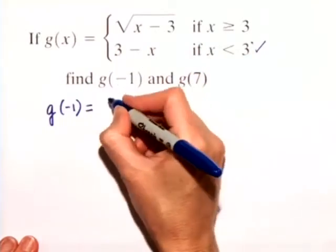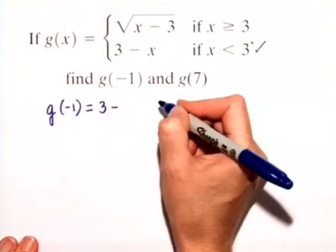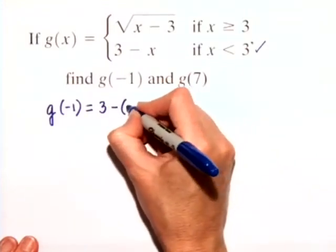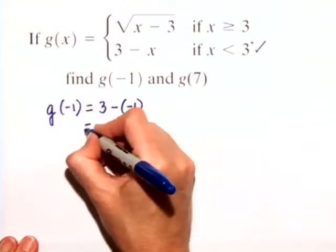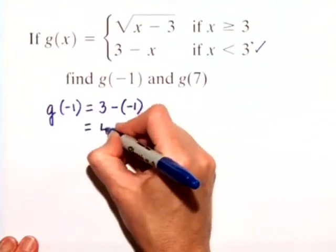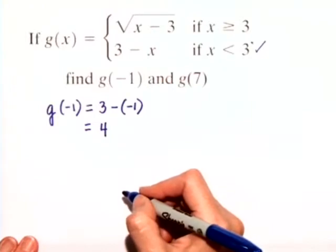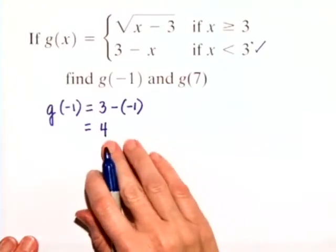So we're substituting negative 1 into the 3 minus x. So 3 minus negative 1 is equal to 3 plus 1, or 4. So therefore, g of negative 1 is equal to 4.